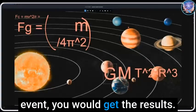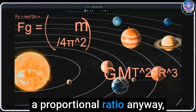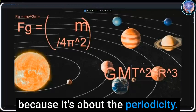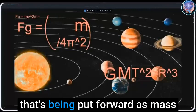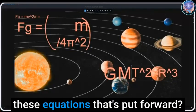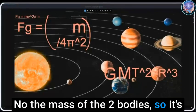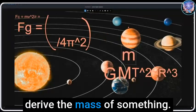Because the mass in this equation cancels out and it's just about these constants and the periodicity of the event, you would get the results. It doesn't matter, it's going to establish a proportional ratio anyway because it's about the periodicity. So are you saying the causal mechanism, the dynamic force that's being put forward as mass attracting mass, isn't substantiated in these equations that's put forward?